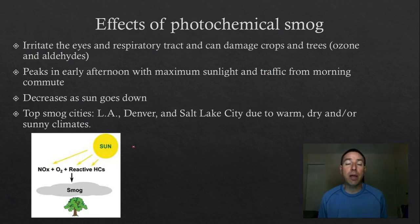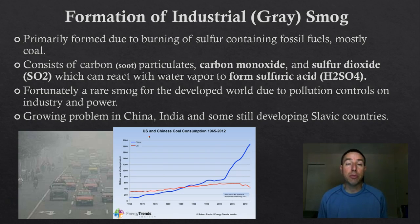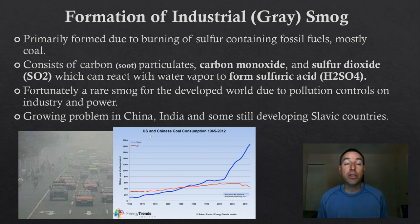I also mentioned gray smog, also known as industrial smog. Industrial smog comes from the burning of sulfur-containing compounds and fossil fuels — mostly coal — as well as soot particles, which give the atmosphere its gray look. Water vapor can interact with sulfur dioxide to form sulfuric acid, causing burning of the lungs, eyes, and other thin tissues. This kind of smog is rare in the developed world due to pollution controls; however, China, India, and some Slavic countries still have a huge problem with gray smog.